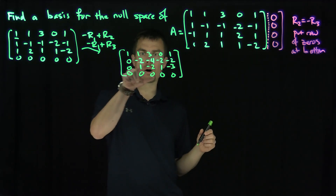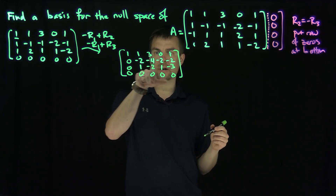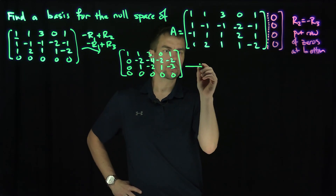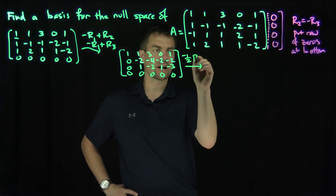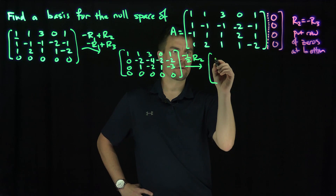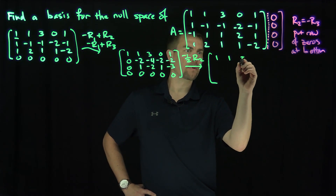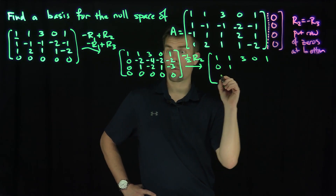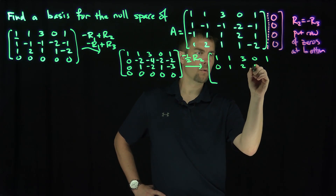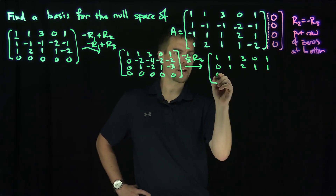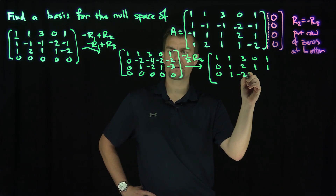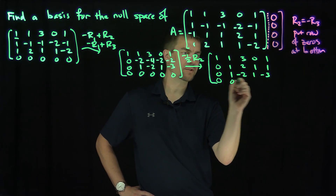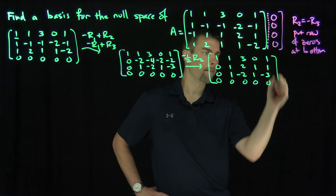Now I want to take those even numbers and turn them into positives by dividing by 2, so I'll do negative one-half times row two. That gives us: 1, 1, 3, 0, 1; then 0, 1, 2, 1, 1; then 0, 1, negative 2, 1, negative 3; then zeros.